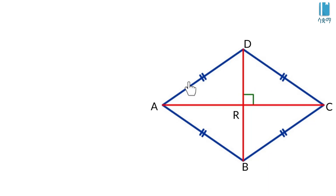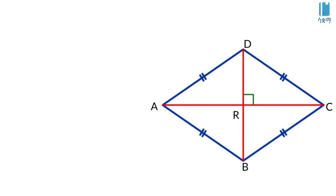The rhombus has diagonals AC and BD. You can see that AC and BD form the diagonals. This gives us the form with points A, B, C, and D, along with the diagonal BD.